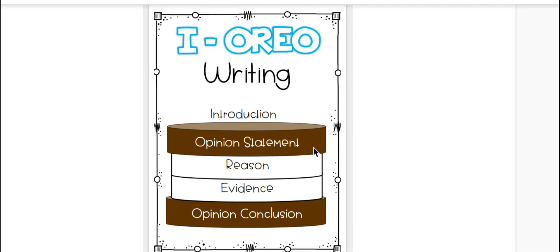The next part of our paragraph is what looks like the stuffing in an Oreo or the filling. It's really, really important to include good reasons and good evidence from your text to help support your opinion statement. When you share your opinion, you want everyone to believe that you are correct and you are right, so it's important to use the word 'because' when you're sharing your reason, and lots of details from the text when you're sharing your evidence.